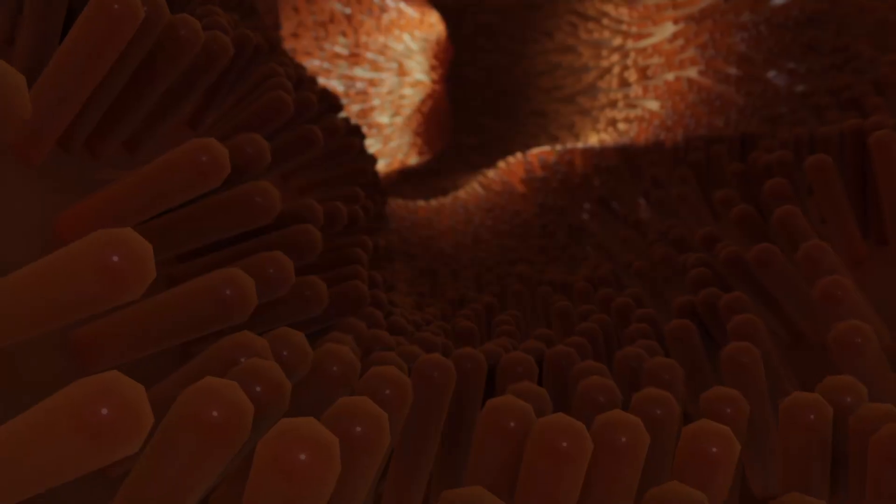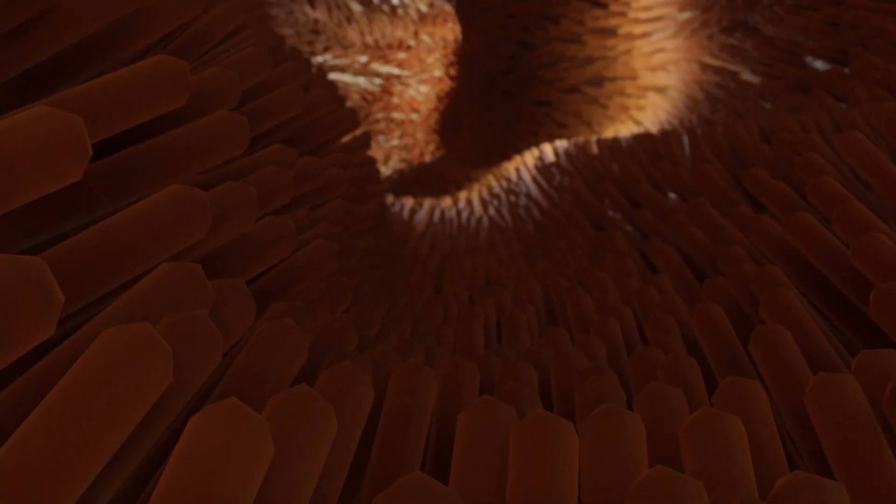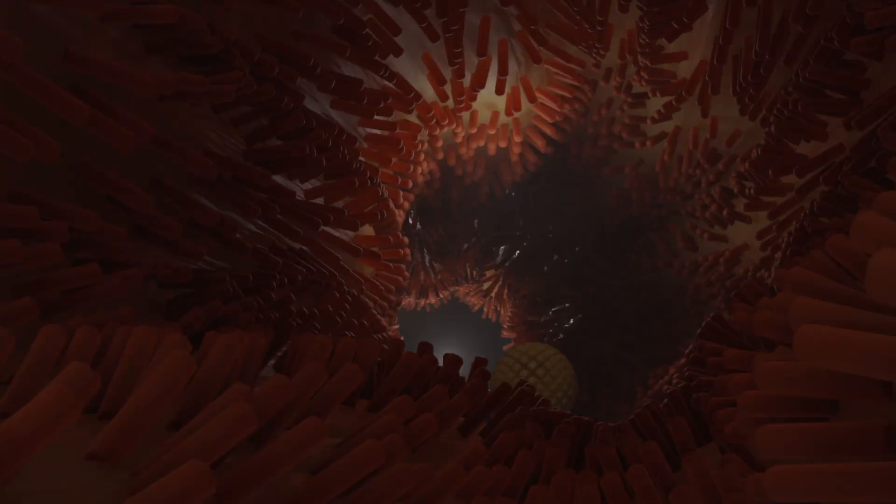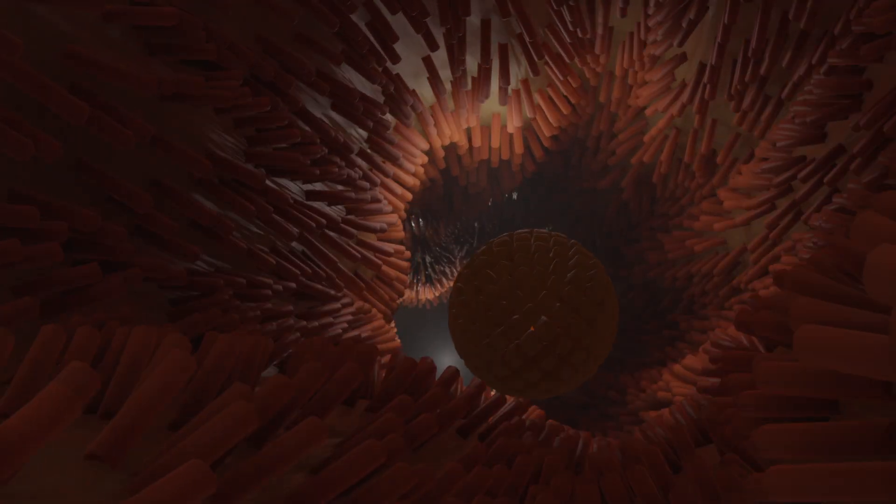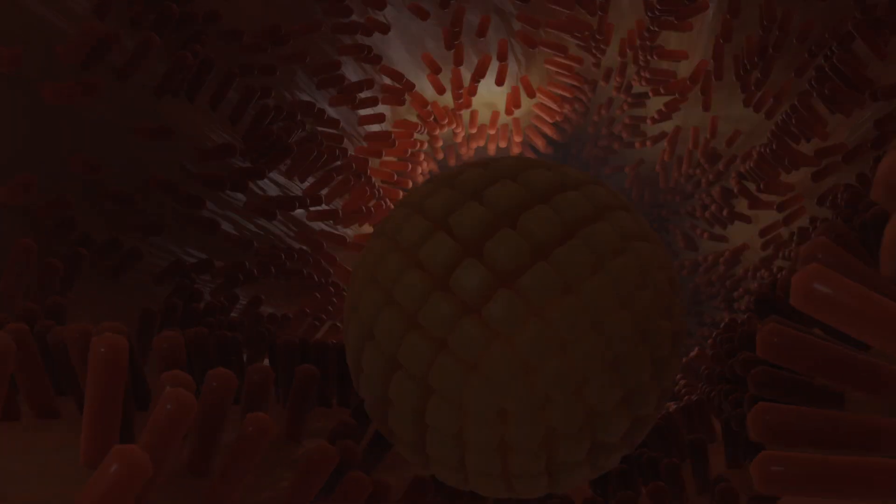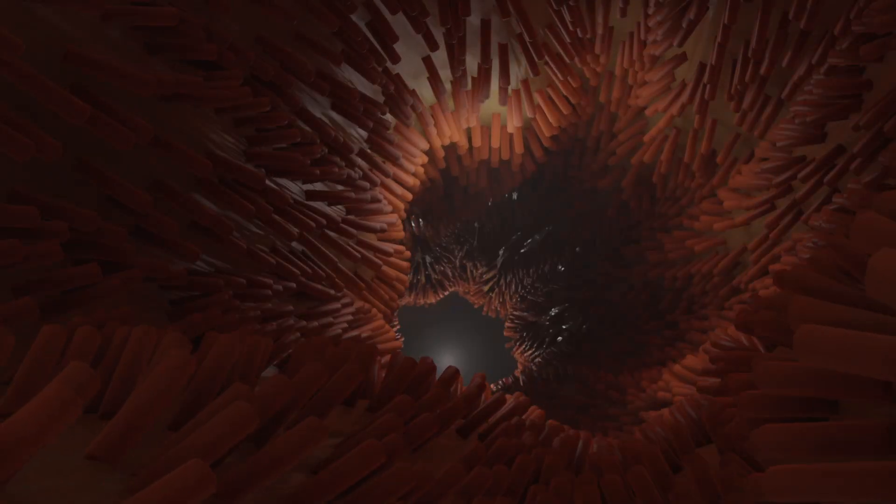The cilia protruding into the cavity are responsible for transporting the egg cells. The coordinated movements of the cellular projections propel the germ cell forward step by step. Since the egg cell is only capable of being fertilized for a few hours, the sperm must move quickly to reach it.